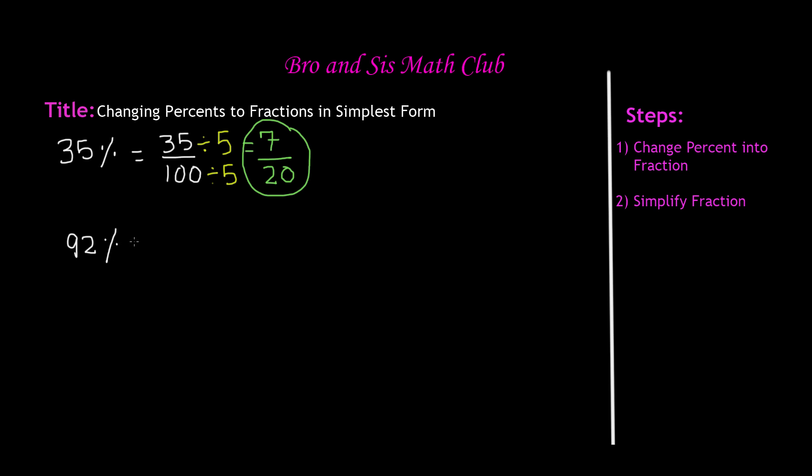Remember, that percent means out of 100. So 92% is the same thing as 92 out of 100. Now, in order to simplify this, we have to divide it. So we're going to take a look at 92, which is our numerator, and see what number is 92 a multiple of.